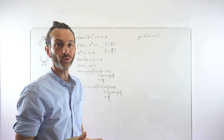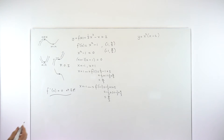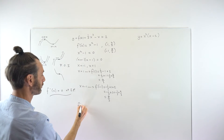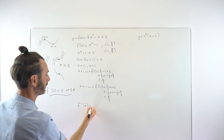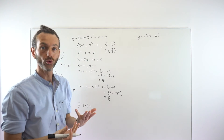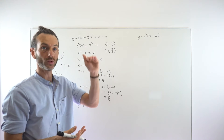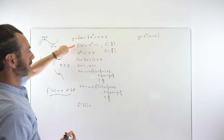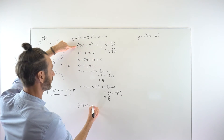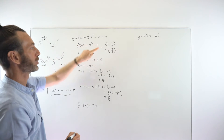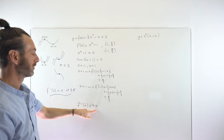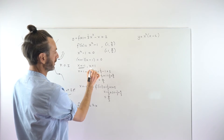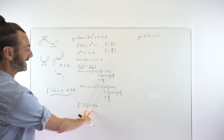We've found the stationary points but not their type — that's what the second derivative test is for. We take the derivative of our first derivative, written as f″(x). Just using the power rule on x squared minus one, differentiating gives us 2x, since the derivative of minus one is zero. So f″(x) = 2x. We then substitute the x-coordinates of our stationary points into this second derivative.